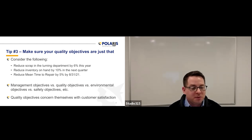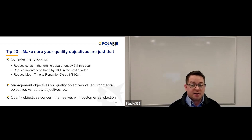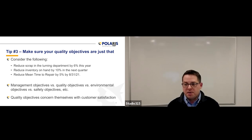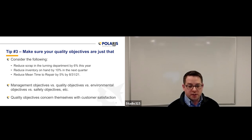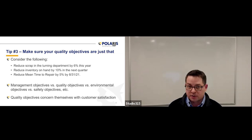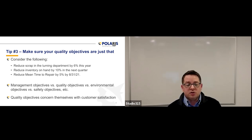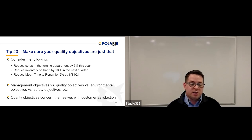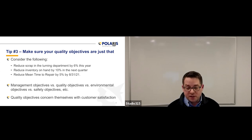Tip number three: make sure your quality objectives are just that. Consider the following. If I say I'm going to reduce scrap in my turning department by 6% this year — that's a pretty good goal. I'm saying what I want to do, where I want to focus, I want to quantify it, I want to give it a time. Same with reducing inventory on hand by 10% next quarter, or reducing mean time to repair by 5% by the end of August. These are all excellent goals and objectives, but they're not necessarily quality objectives. Keep in mind management objectives versus quality objectives versus environmental objectives versus safety objectives.